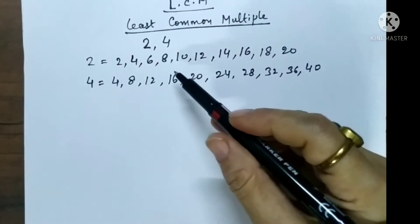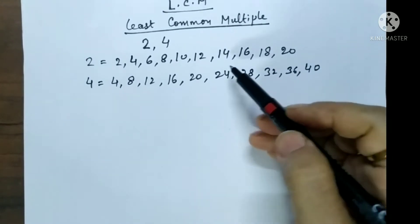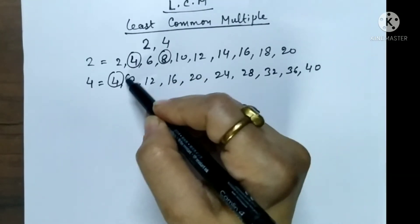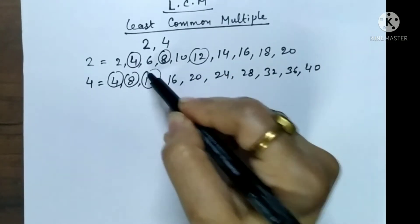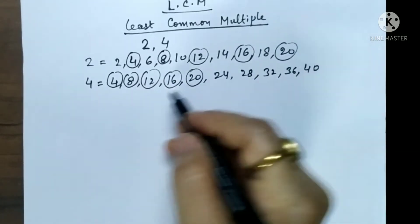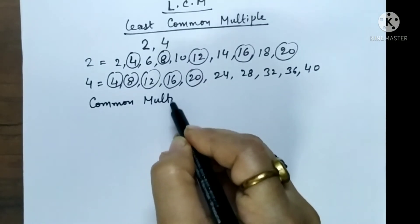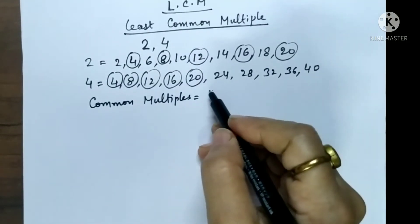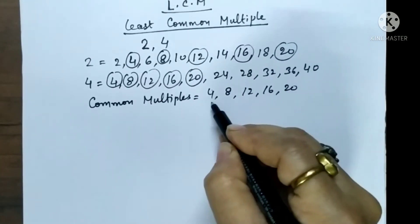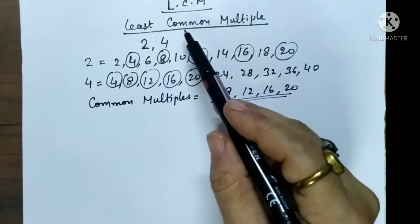Now the next step is you have to find out the common multiples between these two. Now let's see the common number. This is 4, then it is 8, 12, 16 and 20. So these are the common multiples. Here we can write down common multiples: they are 4, 8, 12, 16 and 20. Now we have to find out the LCM. LCM is least, so out of these numbers which is the smallest? 4. So LCM is 4.